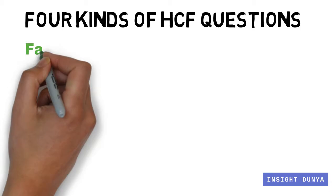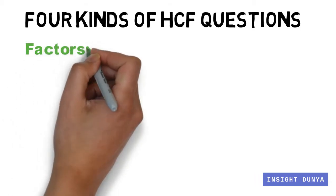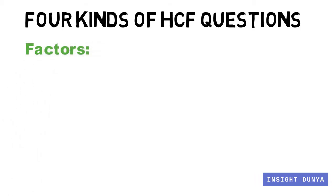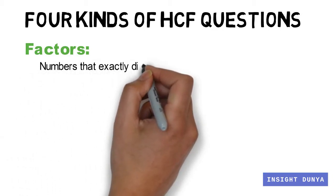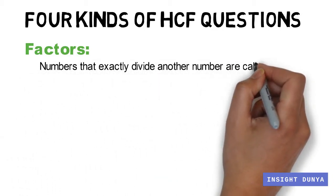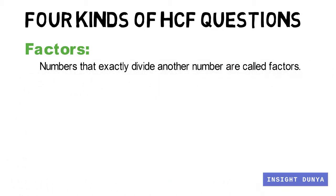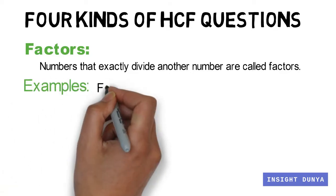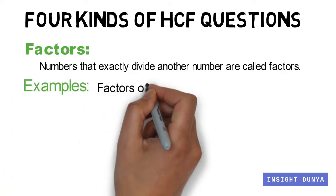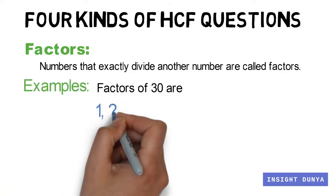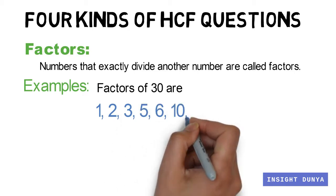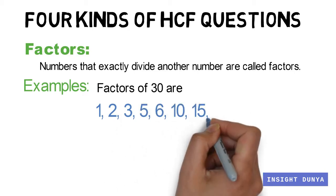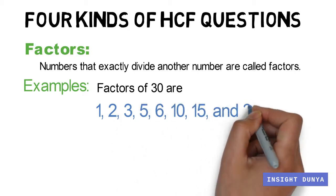First, what are factors? Numbers that exactly divide another number are called factors. For example, factors of 30 are 1, 2, 3, 5, 6, 10, 15, and 30, because each of these numbers exactly divides the number 30.